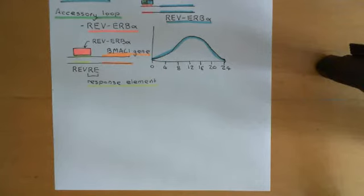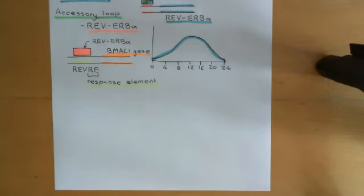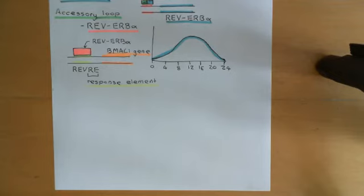Welcome back to this next video in which we are discussing circadian clocks. We're currently in the process of discussing the mammalian circadian clock. We have seen the main example of a mammalian circadian clock, which is present in most mammalian cells. We've seen that this is a transcriptional-translational feedback loop with a period of 24 hours, and it has an accessory loop that helps to reinforce the main feedback loop.